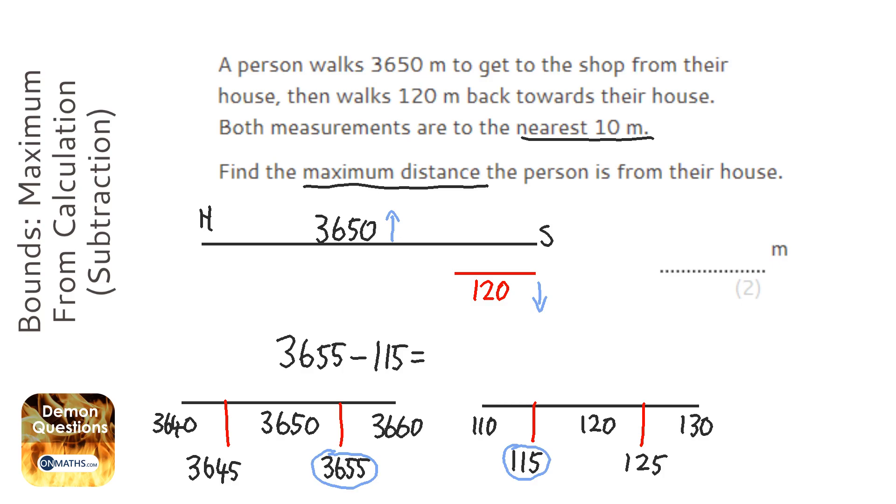3655 take away 115 equals 3540. Now the most common mistake with this is to look at the word maximum and think we're going to take the upper bound of both of them. But when you subtract to find the maximum, you want to do the upper bound take away the lower bound.